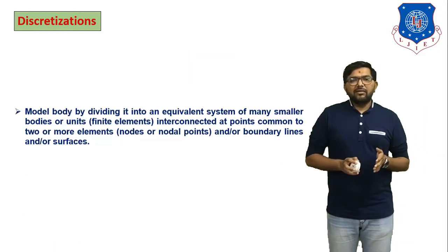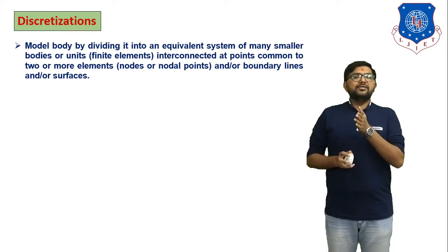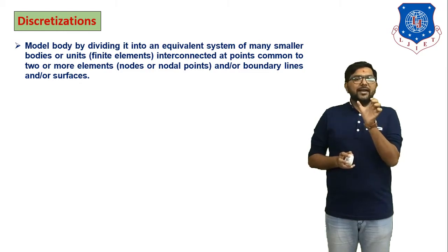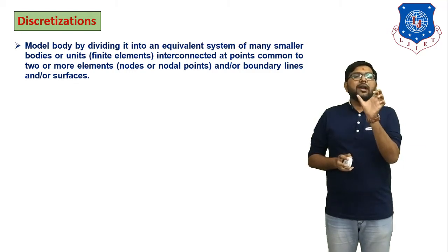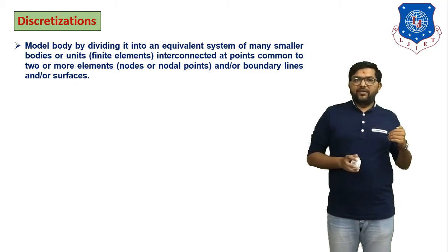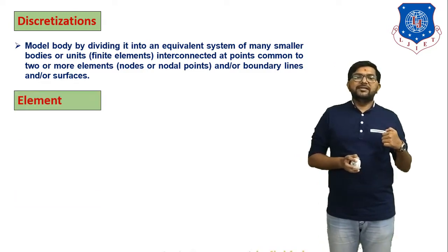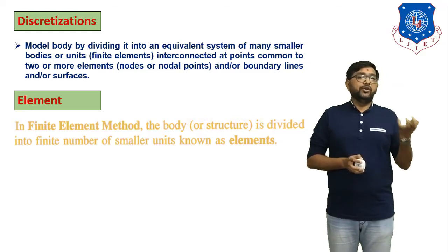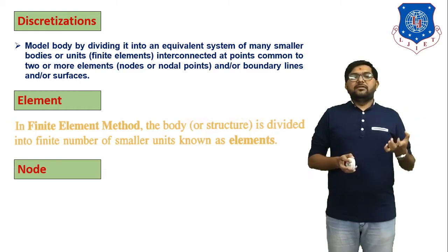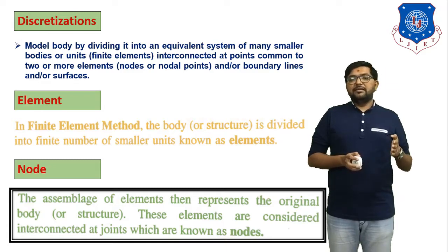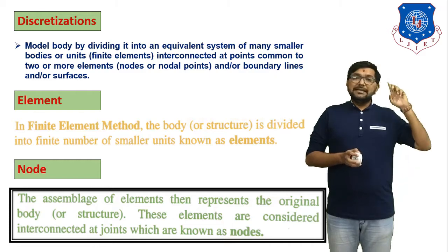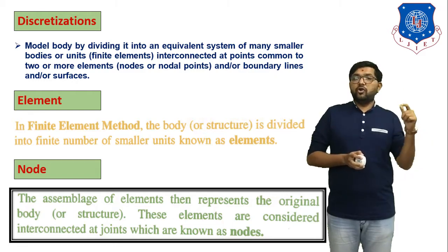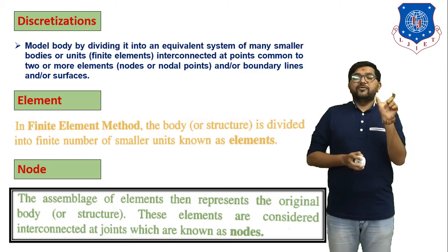Formally: Discretization — the model body is divided into an equivalent system of many smaller bodies or finite elements, interconnected at points common to two or more elements, called nodes or nodal points, and boundary lines and surfaces. Element — the body or structure is divided into a finite number of smaller units, and each unit is known as an element. Node — the assemblage of elements represents the original body; elements are considered interconnected at joints called nodes, meaning any two elements joined at two points, and those points are known as nodes.